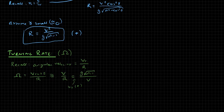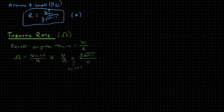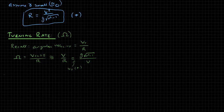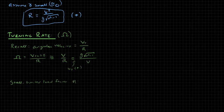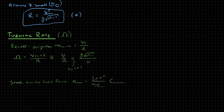So now we need to decide what to do with this load factor. Our stall limited load factor is what we'll use here for the turning rate. So recall that the stall limited load factor N max is equal to 1 half rho V squared divided by W over SW times CL max.